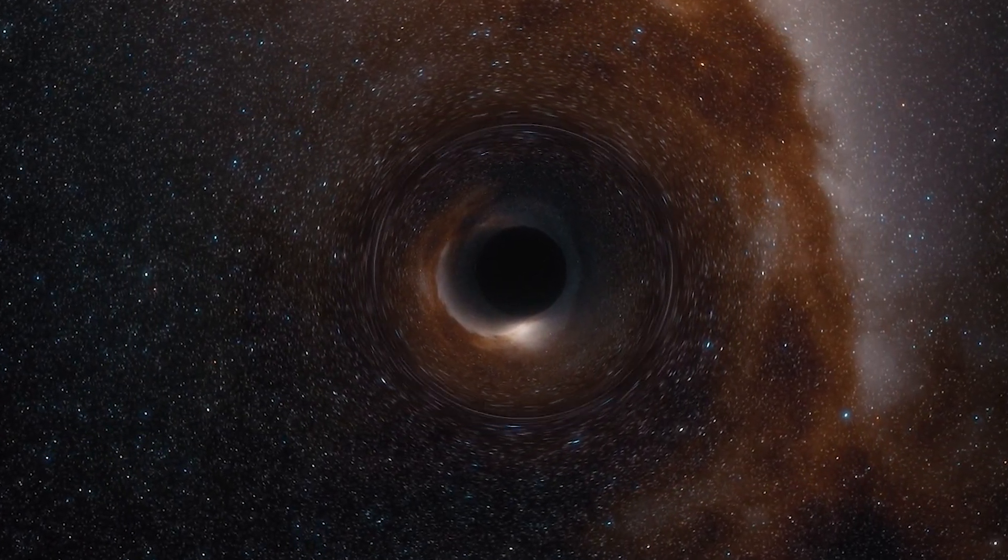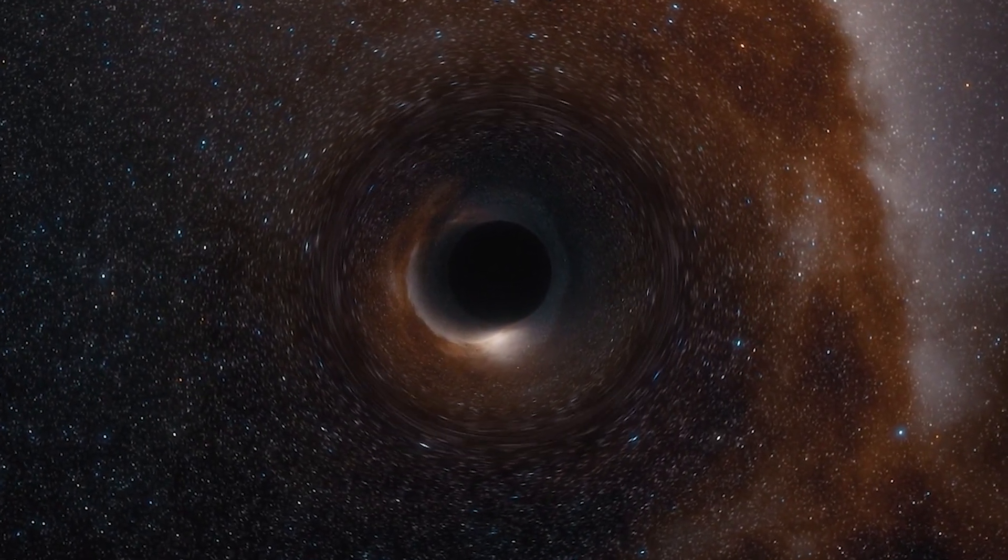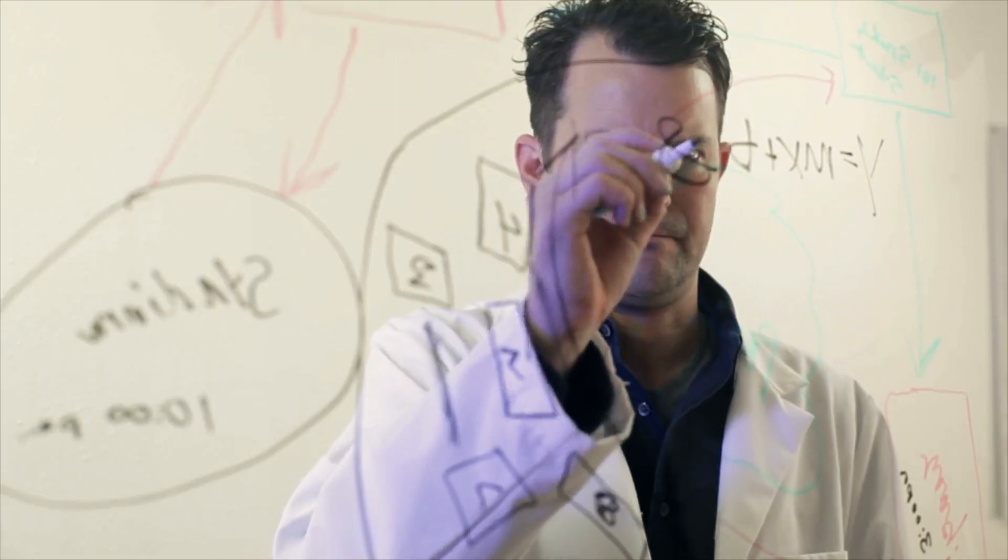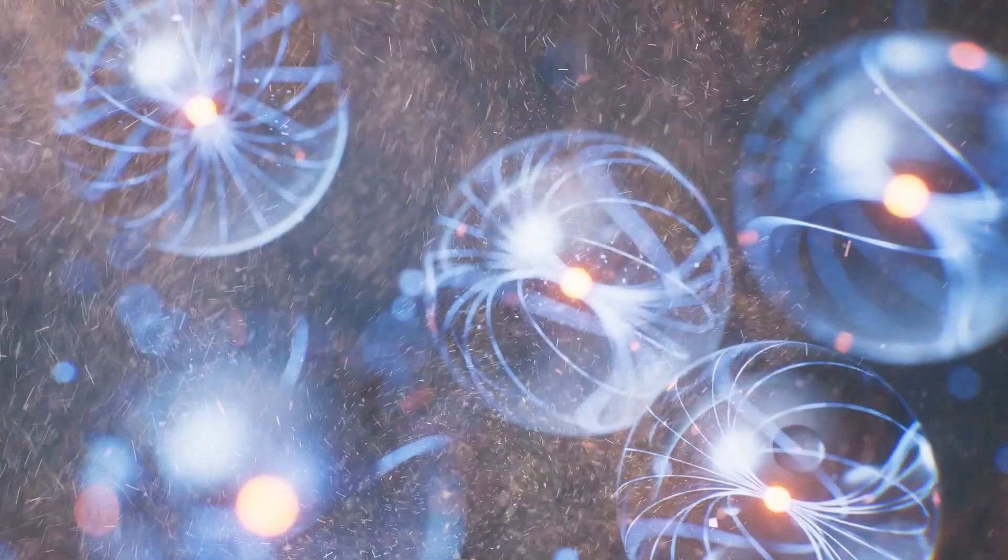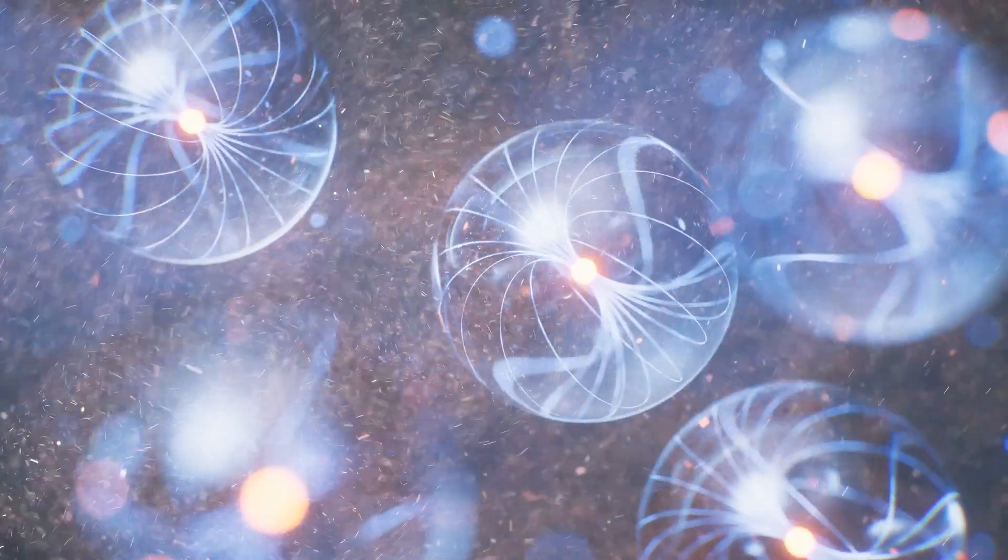The black hole information paradox is a physics problem that keeps scientists up at night. It strikes at the heart of one of the crucial problems in modern physics, the fact that we can't reconcile general relativity and quantum mechanics.